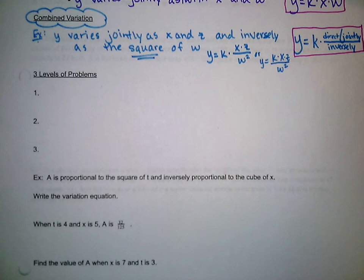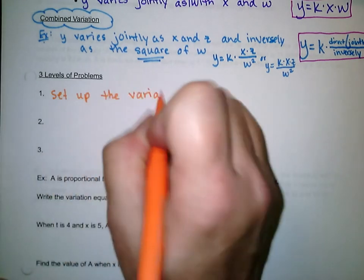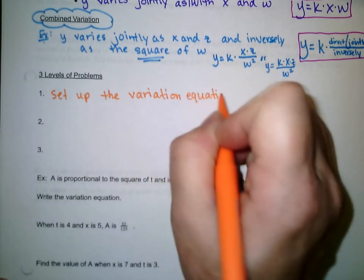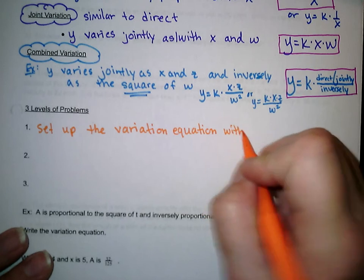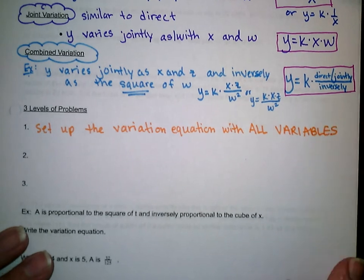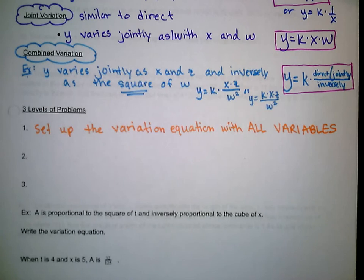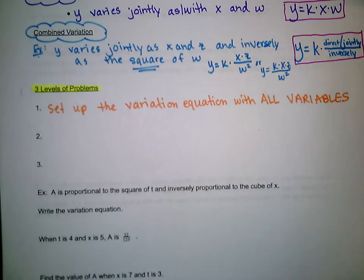There are three levels of problems you'll be asked to do with variation. Level one is just to set up the variation equation with all variables — no numbers, just variables. You have to do level one in order to move on to level two, and level two to move on to level three. So if you have a level three problem, you're going to have to do the first two levels anyway.